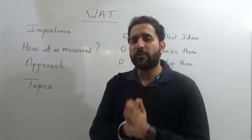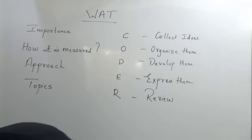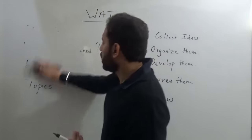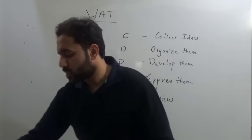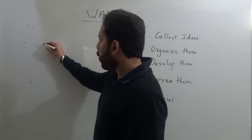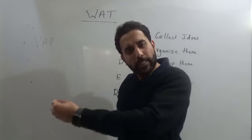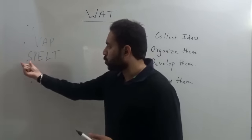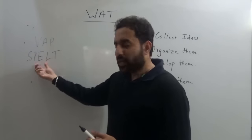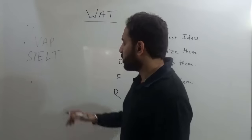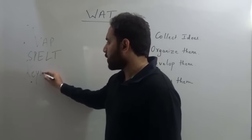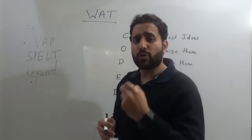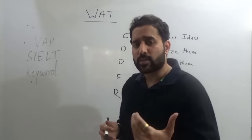Understanding the approach before you start writing your VAT is very important. We'll discuss the approach through an example, as it will be much easier. There are three approaches: the first is the VAT approach — View of the Affected Parties; the second is the SPELT approach — Social, Political, Economic, Legal, and Technical aspects; and the third is the Keyword approach.